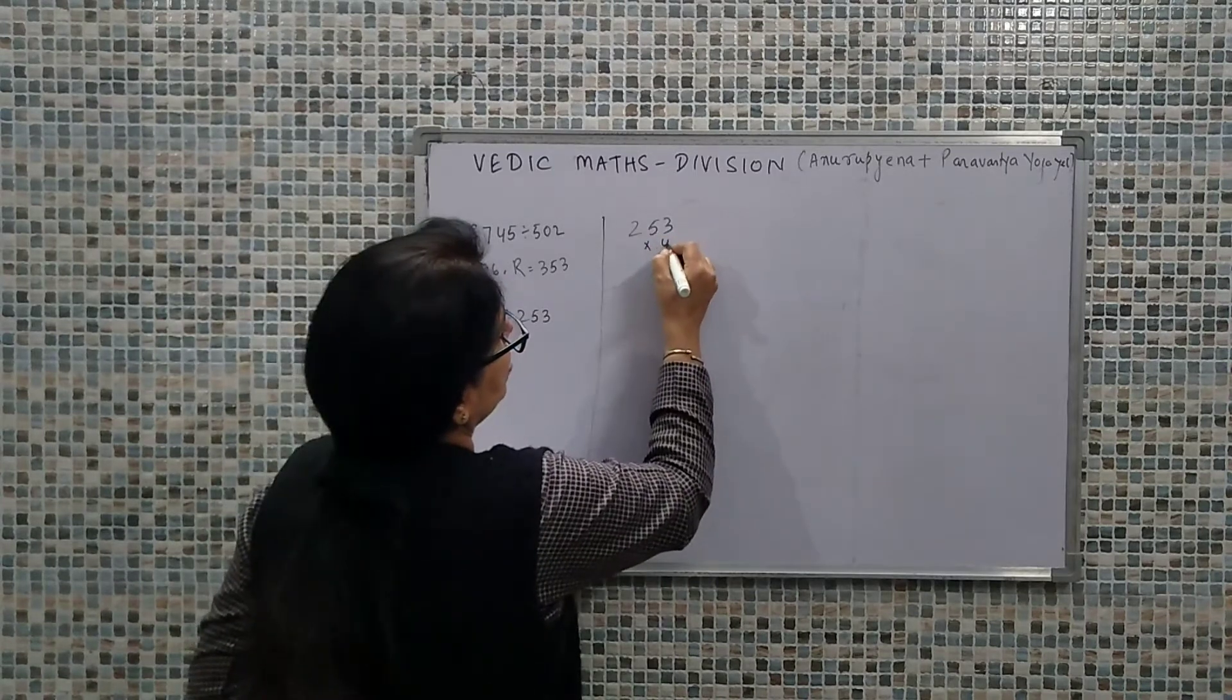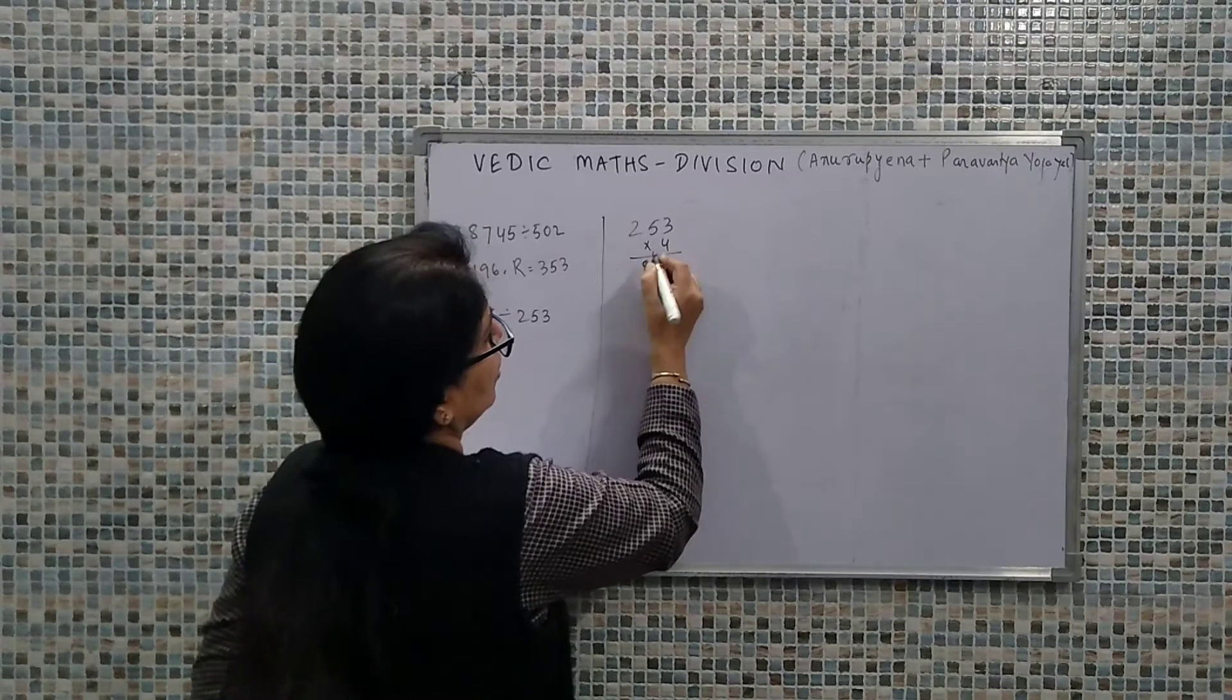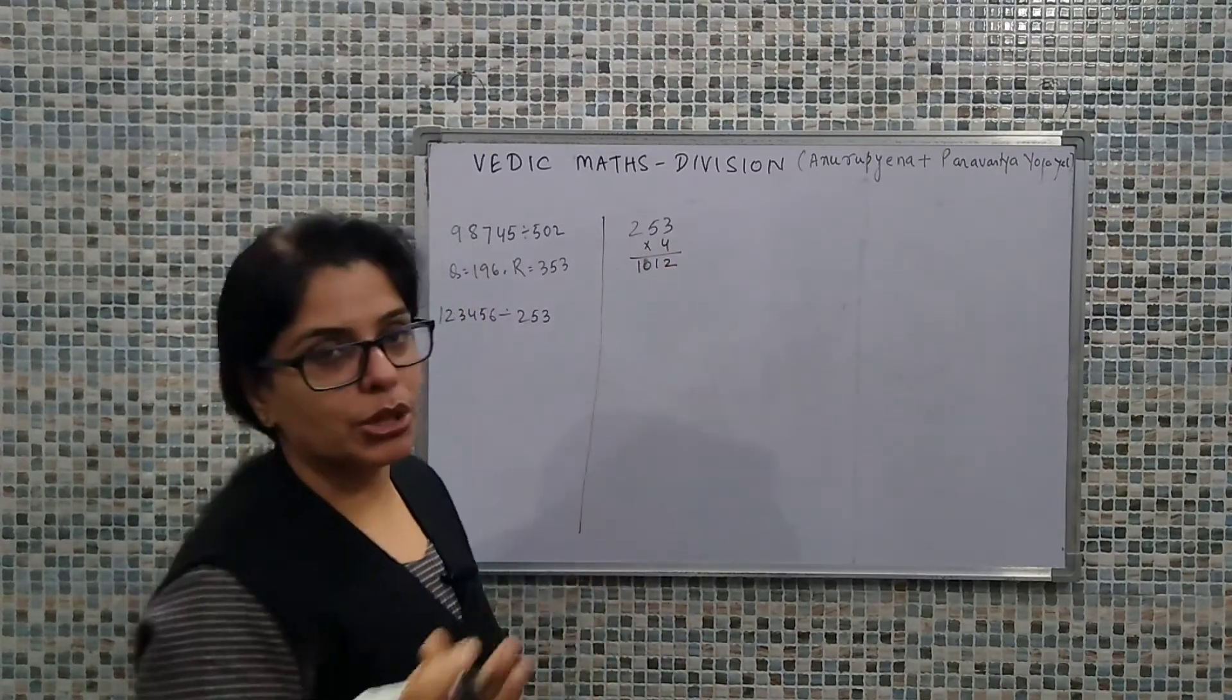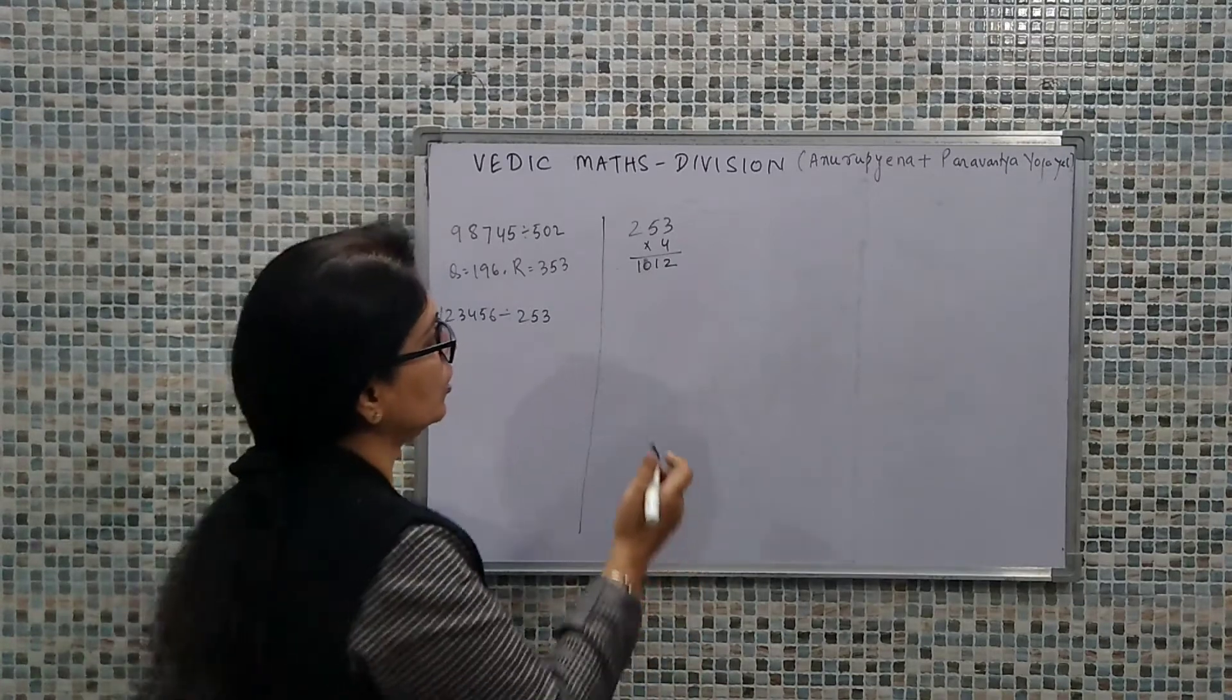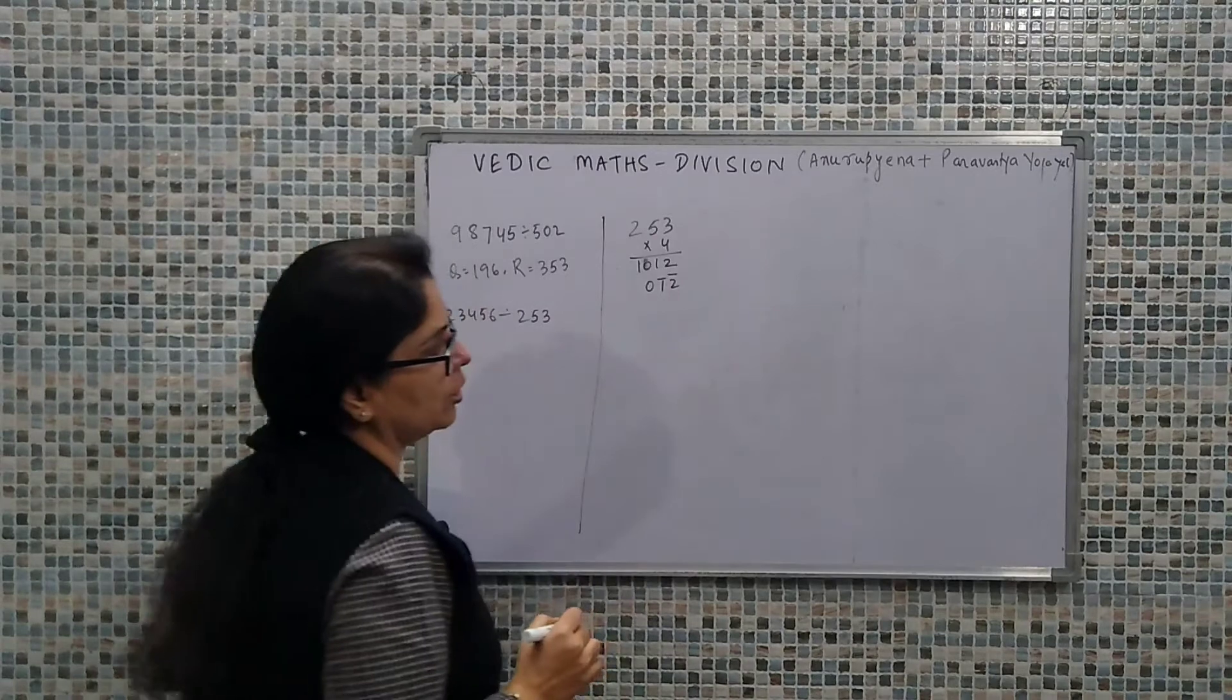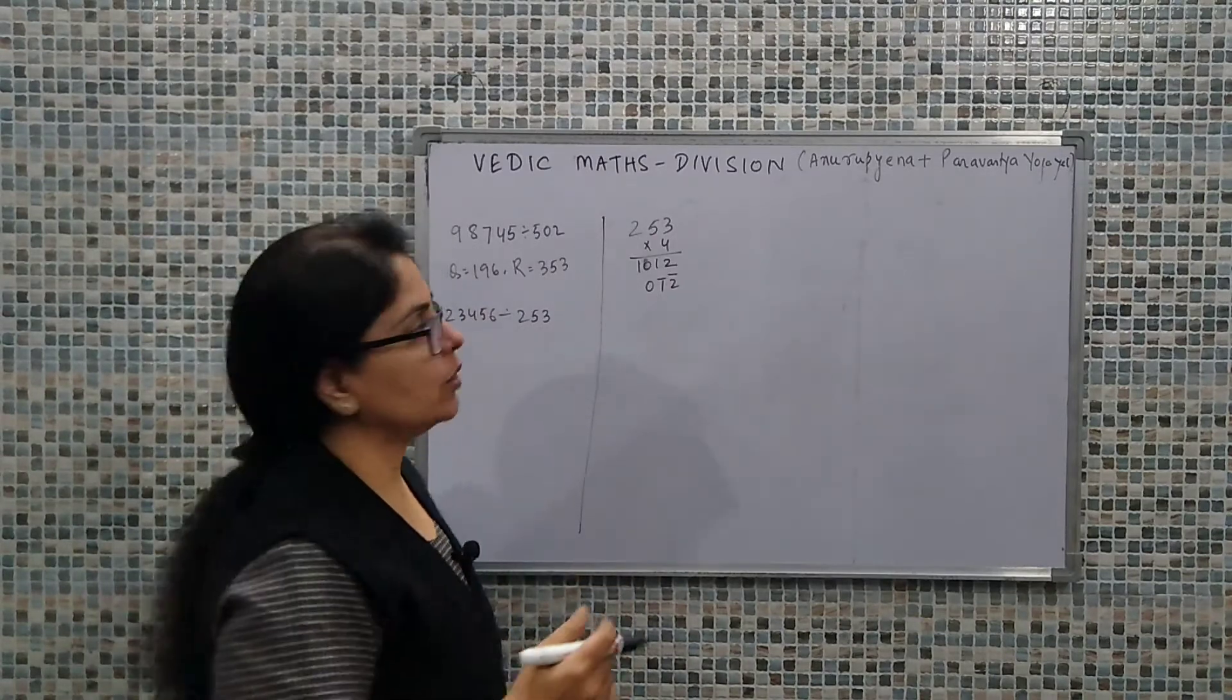Now simply, if we multiply this number by 4, this will be 1012. This means it has come close to our base value. Now we use Paravartya Yojiyat here, so our number is transposed. Now this value 012 will be used as the divisor.